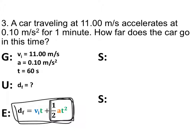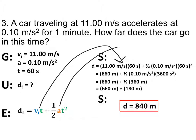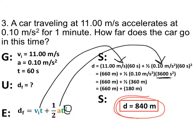So we substitute what we know into our equation. We have 11 meters per second times 60 seconds for the vi·t term, and then ½·a·t² — and remember, the squared goes with the time, so you have to square 60 seconds: 60 times 60 is 3,600. Only use the one-half once, multiply it one time. When you go through the whole process step by step, you'll see that your final displacement — how far does the car go — is 840 meters.